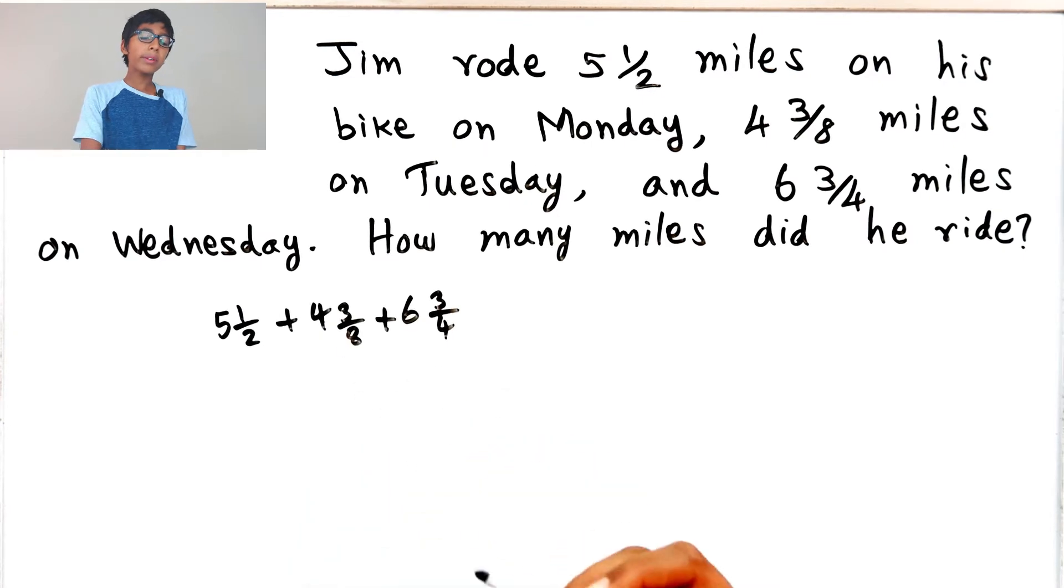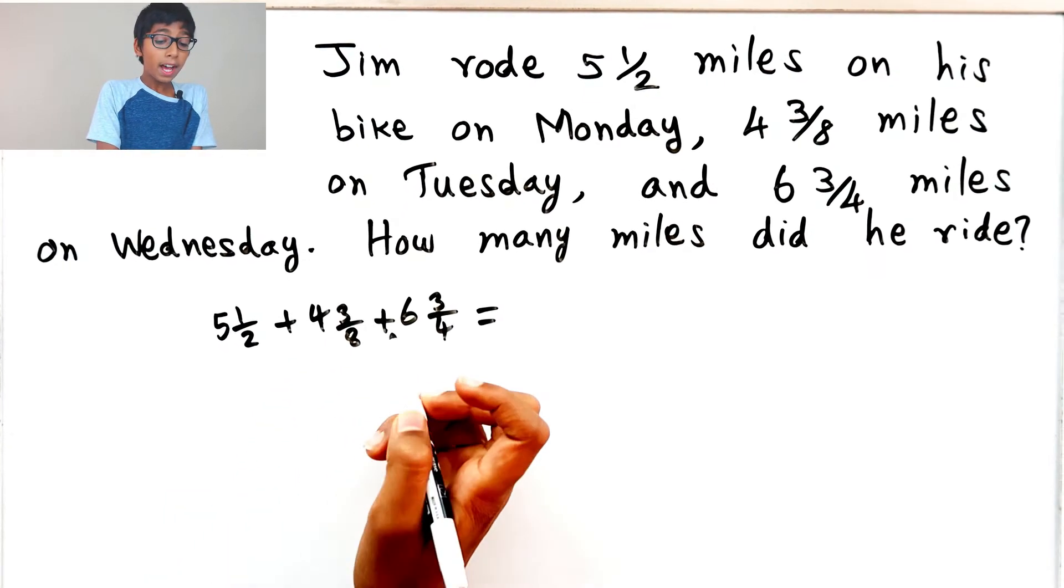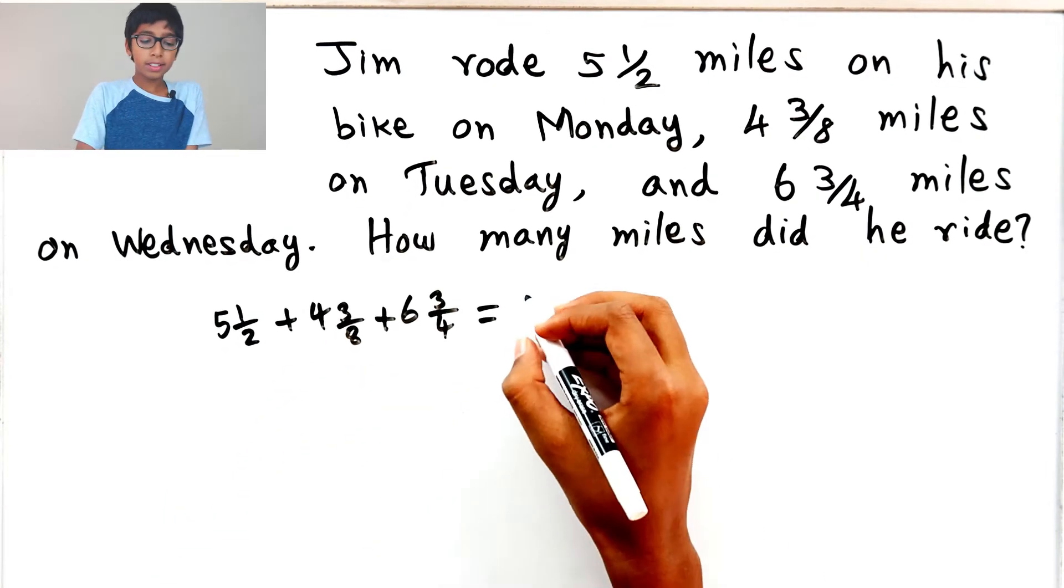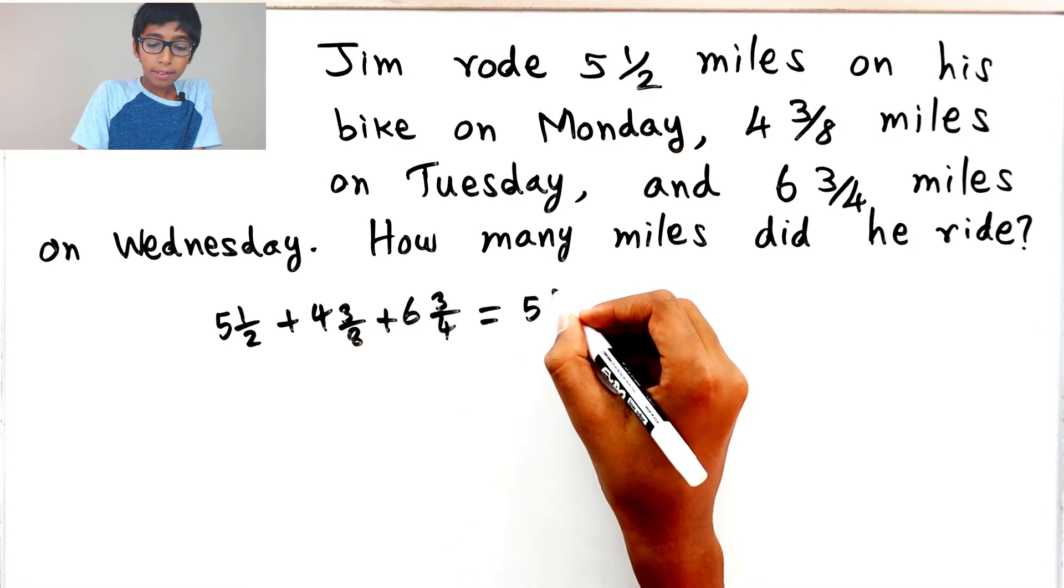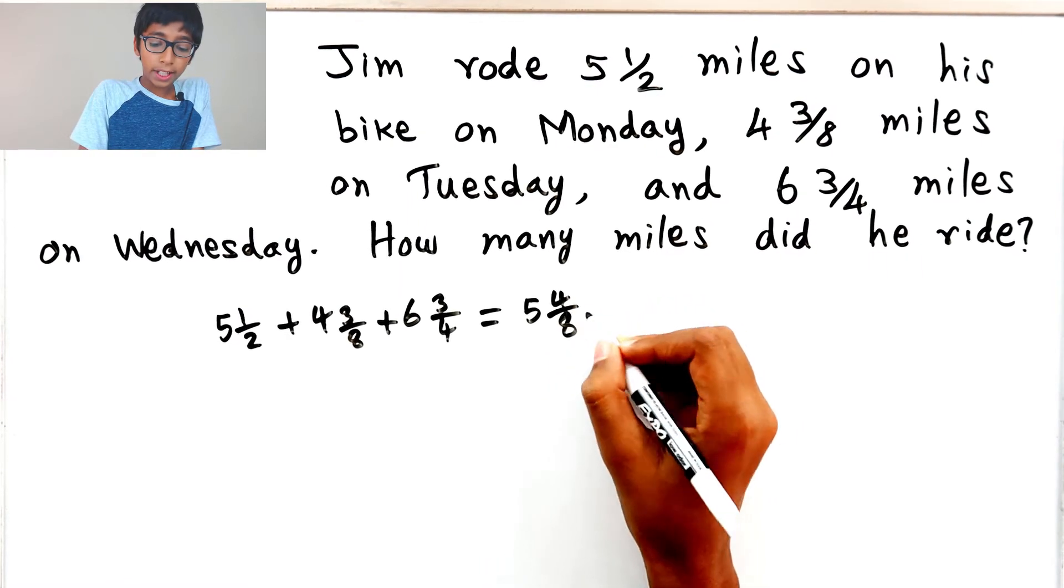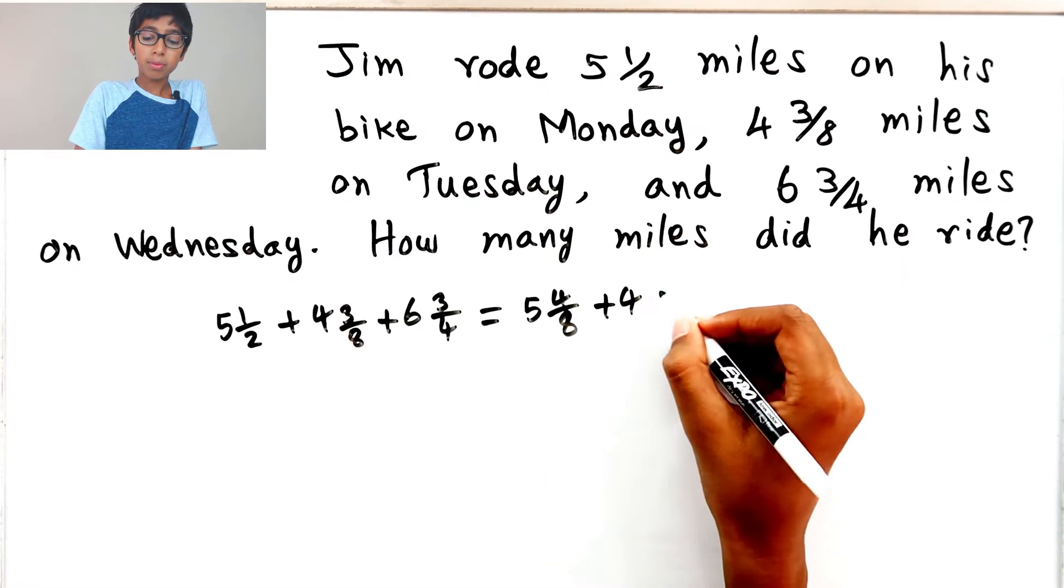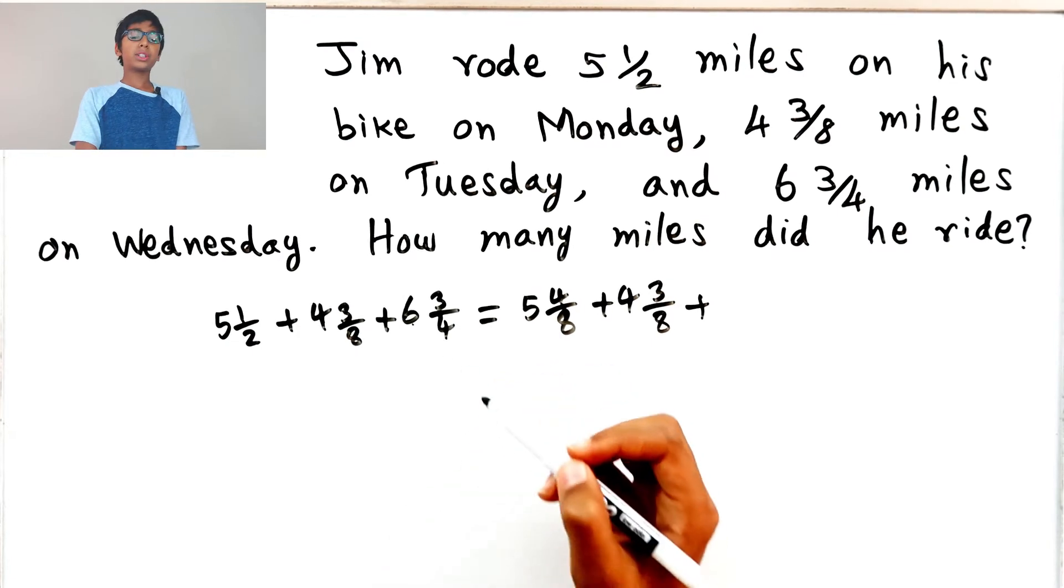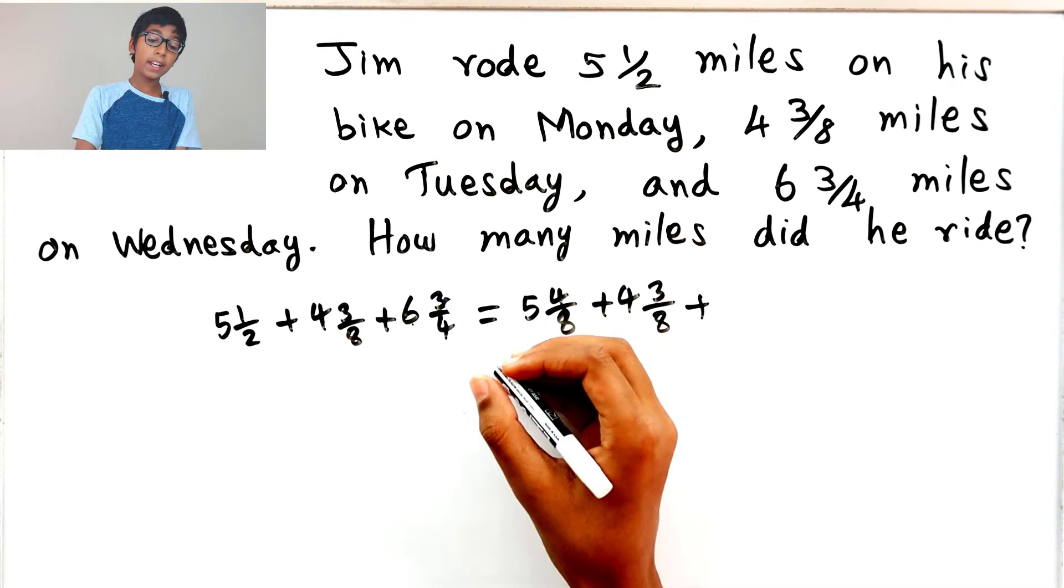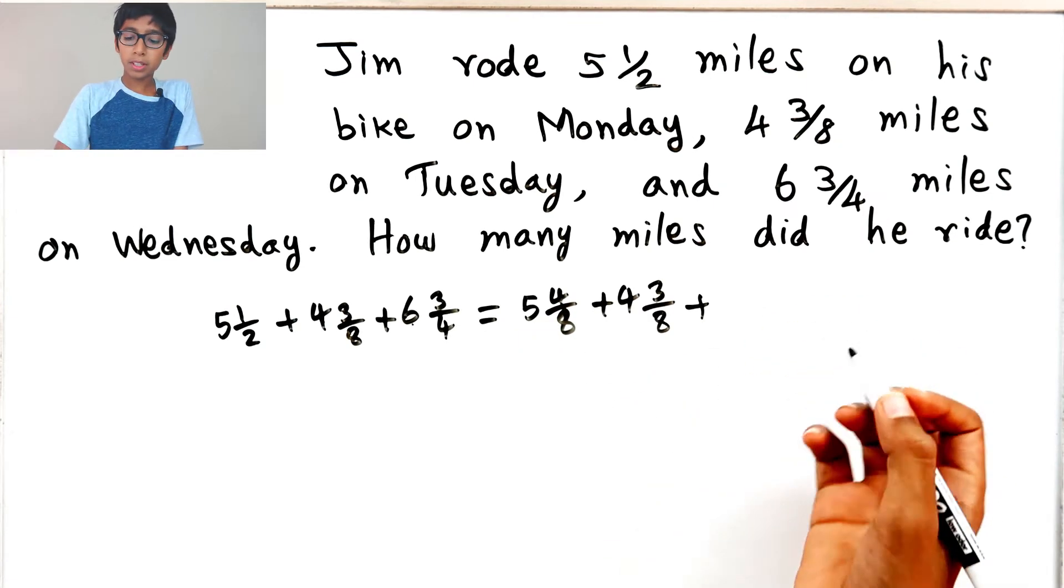So we can't really make 3/8 lower, but we can make 5 1/2 into 4/8. So 5 4/8 plus 4 3/8 plus, we can change 3/4 into 6/8 because I just multiplied both of them by two, so they're the same thing.